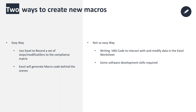Excel has a neat feature that effectively allows you to record a set of steps or actions in a workbook. Behind the scenes it generates macro code corresponding to those actions. Macros in Excel are written using Visual Basic for Applications — a Microsoft programming language used to write automations for Microsoft Office tools. When you use the recording feature, Excel automatically generates that VBA code for you. The not-so-easy way is to actually write the Visual Basic code yourself, which is more flexible but requires software development skills.